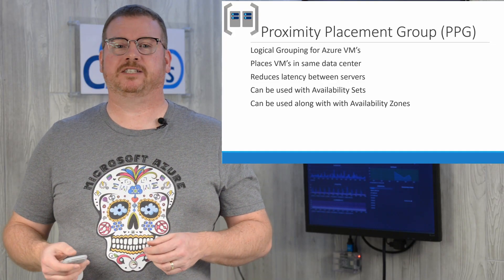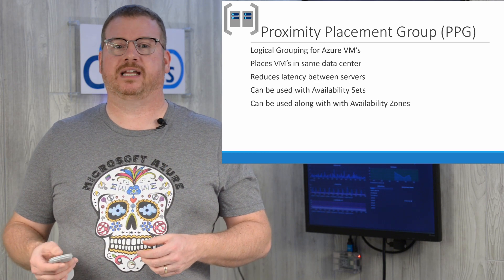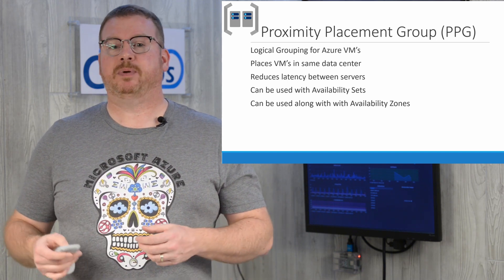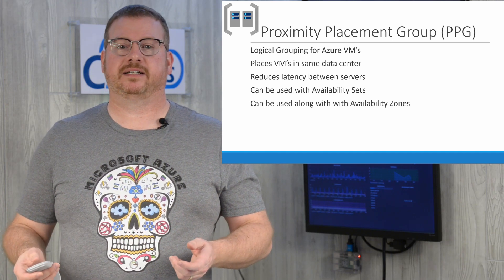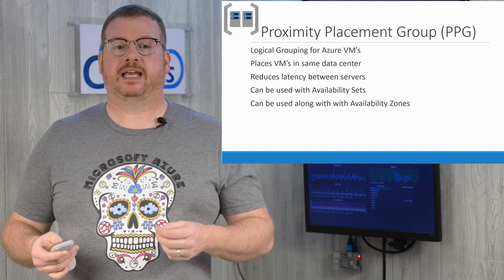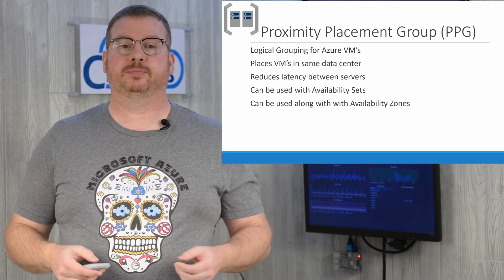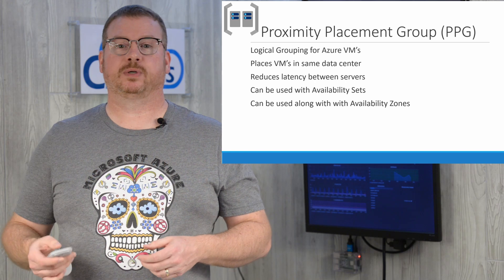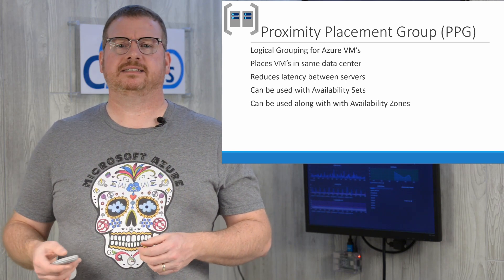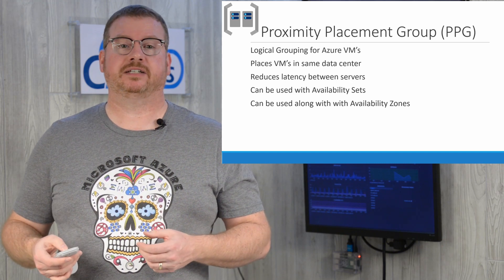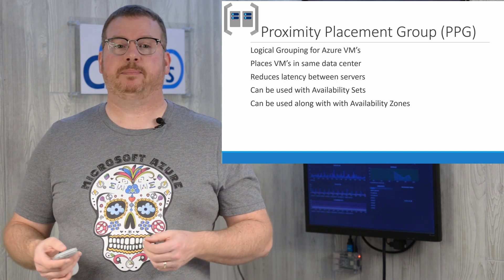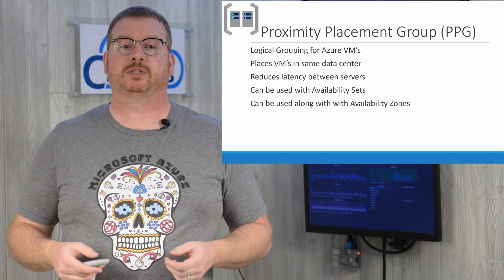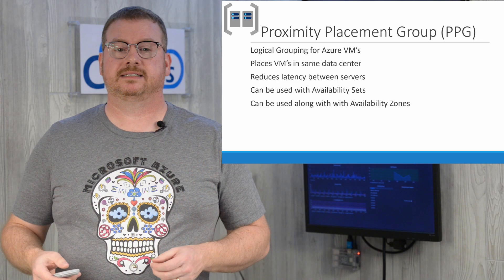With proximity placement groups now generally available in Azure, a proximity placement group is a logical grouping of Azure VMs or scale sets in close proximity. Keep in mind that a region can consist of multiple data centers that could be hundreds of miles apart. Deploying two VMs to a region, even in the same resource group, does not mean they are physically close or in the same data center. This potential distance can increase network latency between servers.